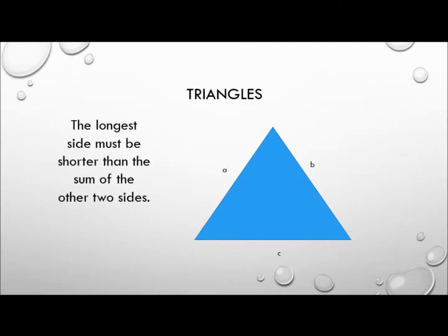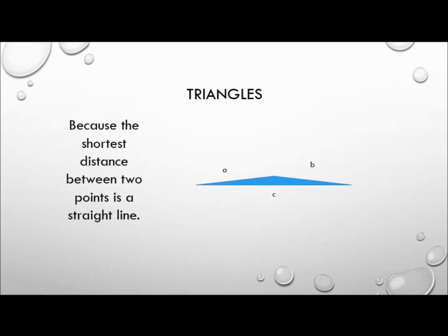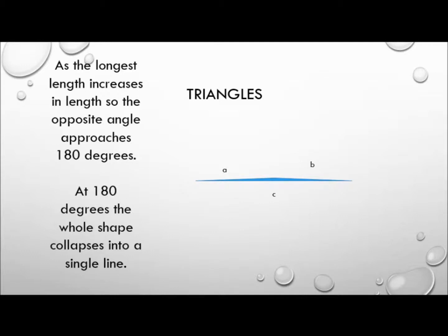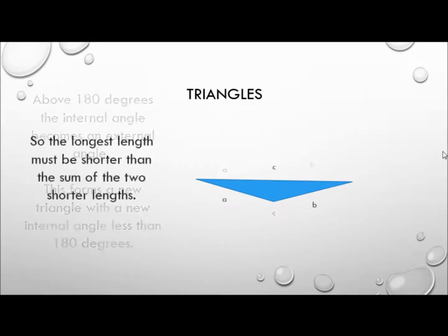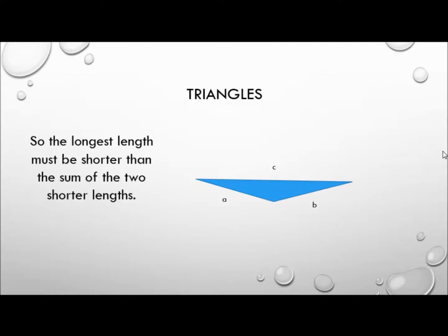For a shape to be a triangle, the longest side must be shorter than the sum of the other two sides, because the shortest distance between two points is a straight line. As the longest length increases, the opposite angle approaches 180 degrees. At 180 degrees the whole shape collapses into a straight line. Above 180 degrees the internal angle becomes an external angle, forming a new triangle with an internal angle less than 180 degrees. So the longest length must be shorter than the sum of the two shorter lengths.